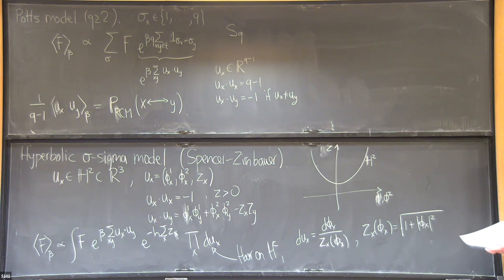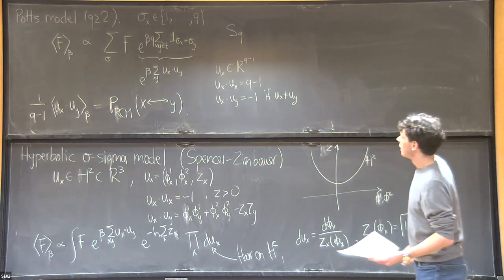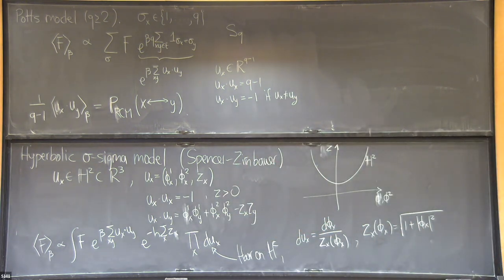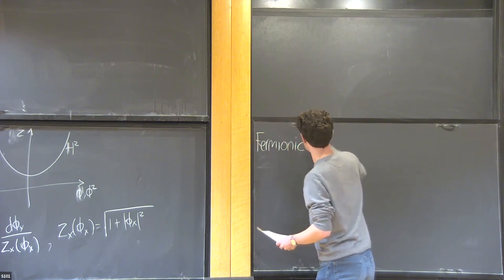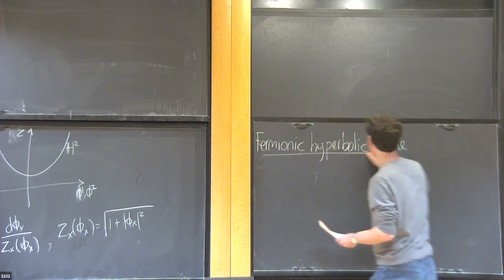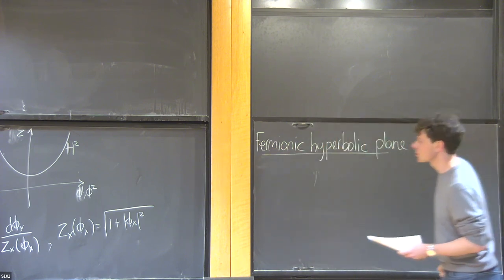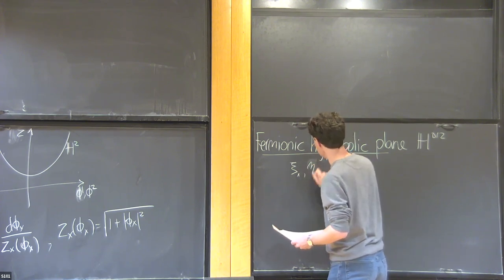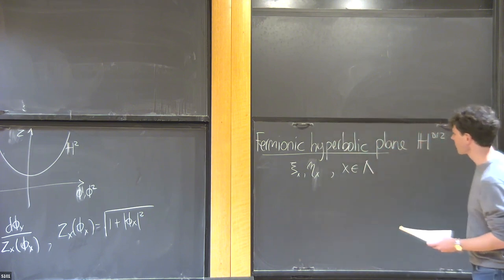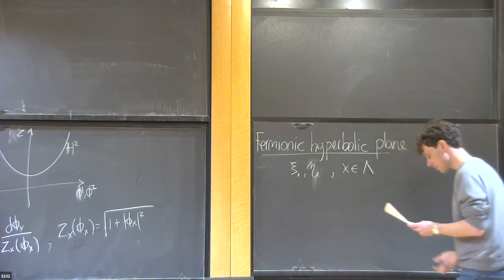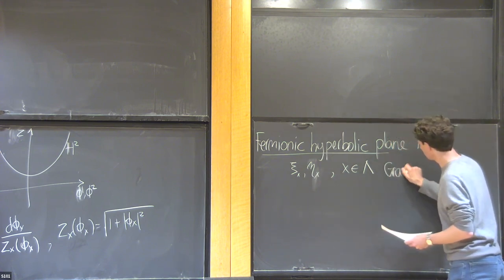So that's the hyperbolic sigma model. As it turns out, the Q-equals-zero Potts model is a fermionic version of this hyperbolic sigma model — the H^(0|2) model. What is the fermionic hyperbolic plane H^(0|2)? We take two anti-commuting Grassmann variables psi_x and eta_x for each vertex x in lambda. So psi_x and eta_x all anti-commute with each other — they are elements of an exterior algebra.